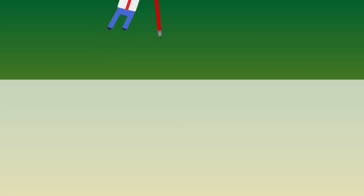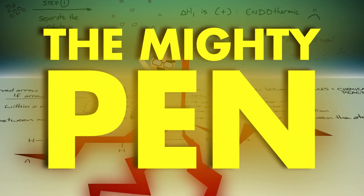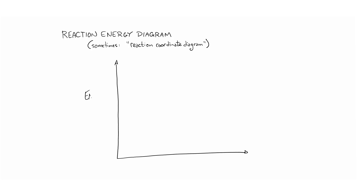The third requirement of collision theory is that the collision must have sufficient energy. To answer that, we're going to need to draw some stuff. A really important concept for reaction kinetics and for chemistry in general is something called the reaction energy diagram. We're going to use them a lot in this course because they are a simple but powerful way to convey a wide range of useful information about a chemical reaction.